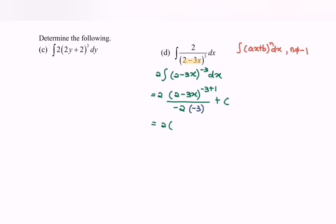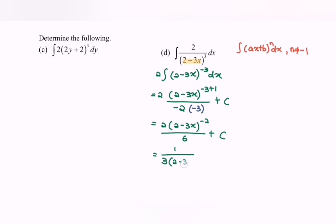Rewrite the situation and we will have 2 multiplied by (2 − 3x) to the power of negative 2 over 6, plus c. And finally we will have 1 over 3 times (2 − 3x) to the power of negative 2, plus c. So here we are, and thanks for watching.